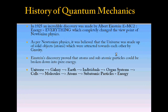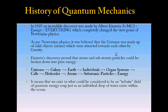So talking from the macroscopic level, the universe is comprised of millions of galaxies. Like our galaxy, the Milky Way, is one such galaxy, and our planet Earth is a part of one of the solar systems of the Milky Way. Now the Earth is made up of a number of individuals in different lives and forms. Say, for example, we as human beings are individuals made up of organ systems. Now every organ system is made up of millions of cells. Cells in turn are made up of molecules. Molecules are made up of atoms, and atoms can further be broken down into subatomic particles. And subatomic particles are nothing but energy state—pure energy. It means that we exist in what could be considered an infinite field of quantum energy soup, just as an individual drop of water exists within the ocean.